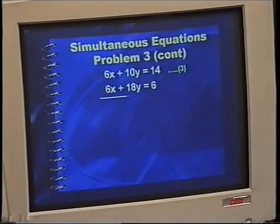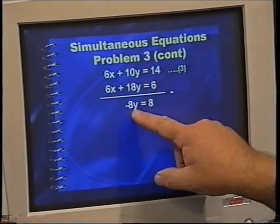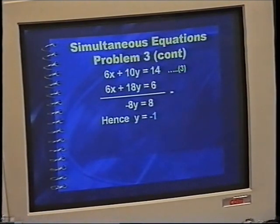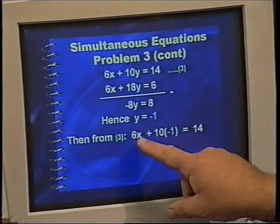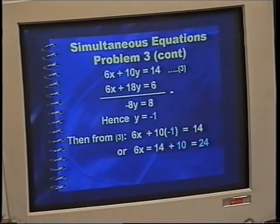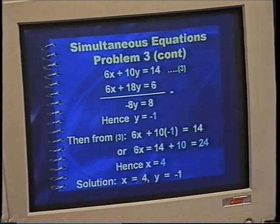I have subtracted there. 10Y subtract 18Y is negative 8Y, and 14 subtract 6 is 8. From that we get Y equals negative 1. Then I use equation 3 to get the other value. 6 times X plus 10 times negative 1 equals 14. Simplifying gives me 6X equals 14 plus 10, and that equals then 24, and from that we get X equals 4. Rewriting it as a solution, X equals 4, Y equals negative 1. You will agree with me that this was quite a difficult problem. A lot of things you had to do, rearranging, then the elimination, then the substitution. Now sometimes we have 3 equations and 3 unknowns, and then the process becomes even more difficult, and perhaps then it's time to grab the calculator and let the calculator do the work.